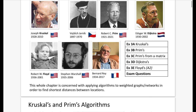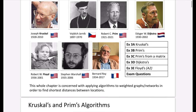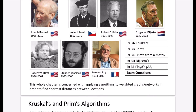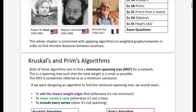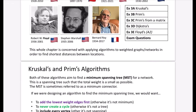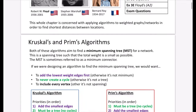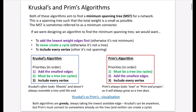This whole chapter is concerned with applying algorithms to weighted graphs or networks in order to find the shortest distances between locations. You can see why that's going to be useful — whether connecting villages with fiber optic cable or delivering things to lots of locations. In the textbook they do Kruskal's and Prim's algorithm separately, but I wanted to look at both simultaneously because they're really similar to each other.